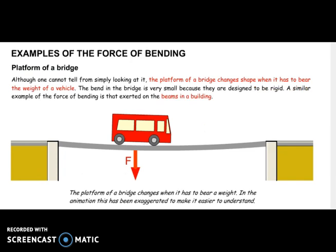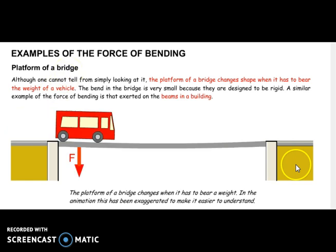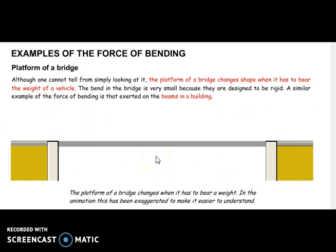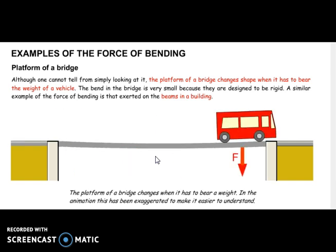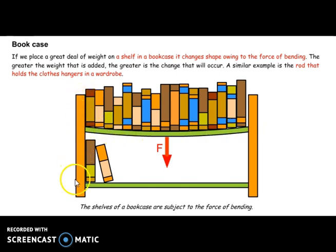A very good example of an element subjected to bending is the platform of a bridge. Look what happens when a bus crosses the bridge — can you feel the deformation? The deformation, in fact, isn't so high; this is an exaggeration for you to understand what bending stress is. Another example of bending stress: in a shelf, the horizontal elements are always subjected to bending, and the verticals are subjected to compression.